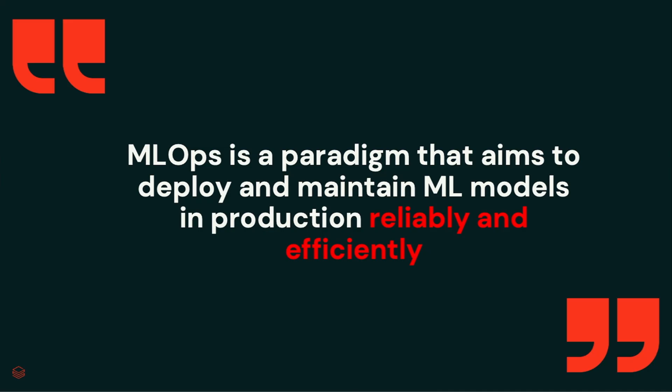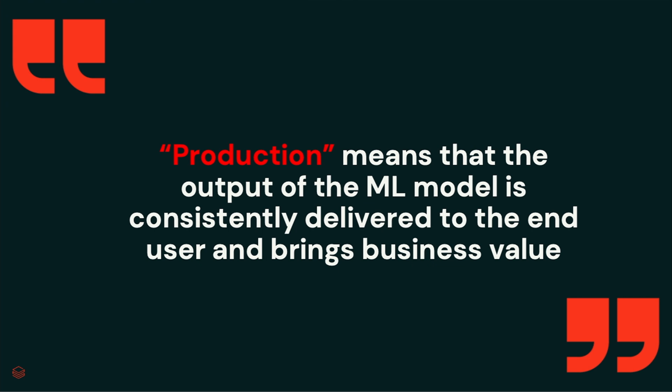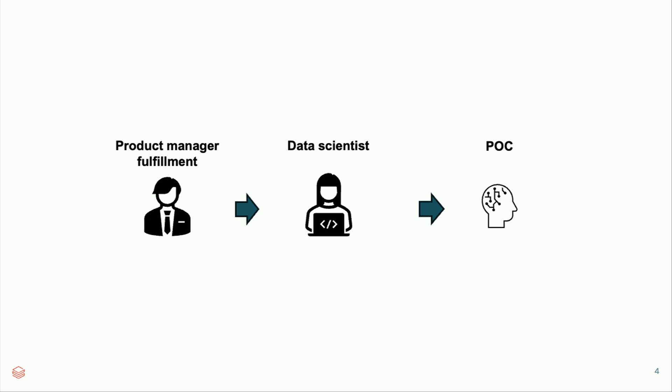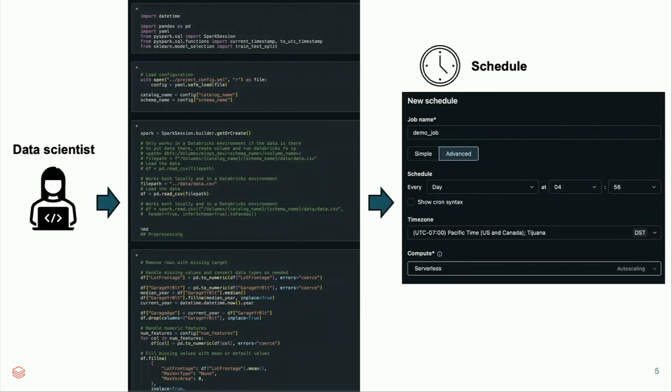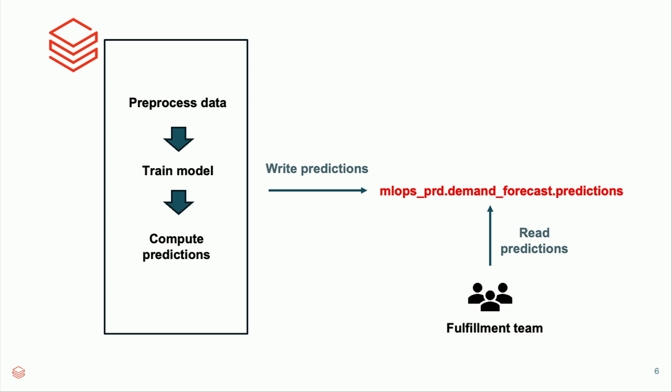MLOps is a set of practices that allows you to bring machine learning models to production in a reliable and efficient way. Production means that the results of your machine learning models are being used in business processes and actually deliver value. For example, a product manager of fulfillment asks a data scientist to deliver a demand forecasting model. The data scientist starts a POC in a notebook with three steps: data pre-processing, model training, and predictions — written to a Delta table and used by the fulfillment team.